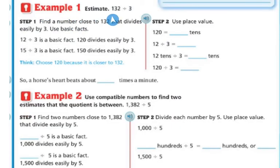Example one: estimate 132 divided by 3. First I'm going to find a number that's close to 132 that divides easily by 3. So if I use basic facts, I know that 12 divided by 3 is a basic fact and 120 divides easily by 3. I also know that 15 divided by 3 is a basic fact and 150 divides easily by 3.